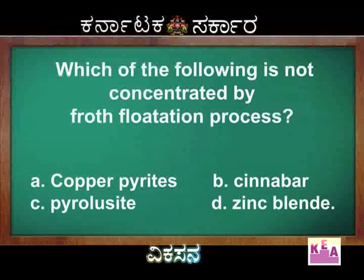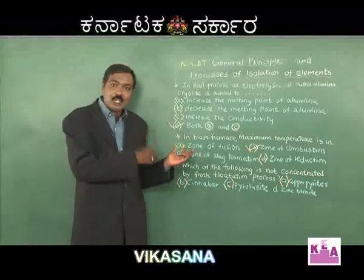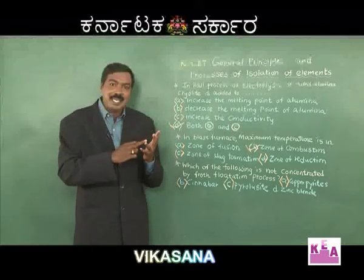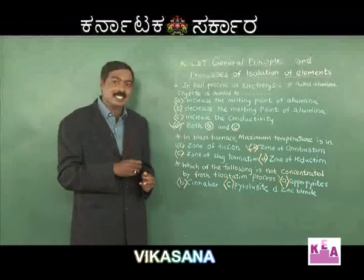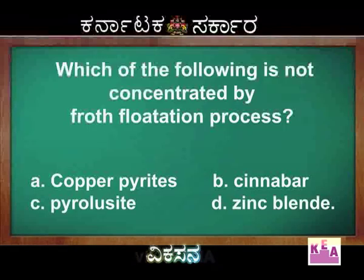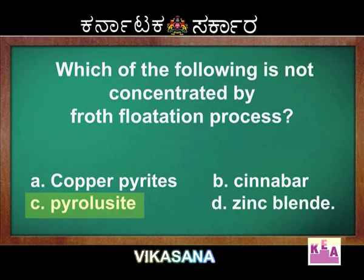From this, you would have understood the answer: among all the options A, B, C, and D, Option C — pyrolusite (MnO2) — does not contain sulfur or sulfide. Therefore, it is not concentrated by the froth flotation process.